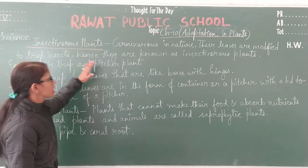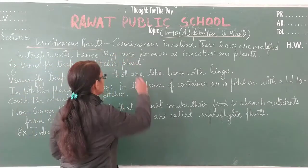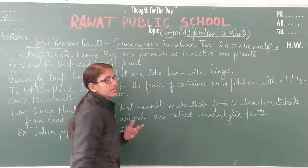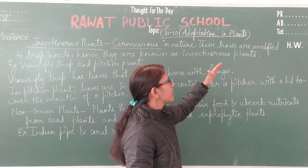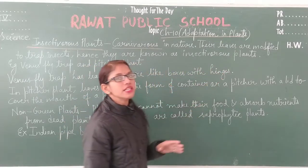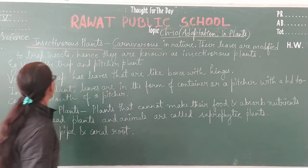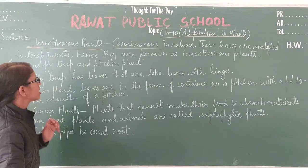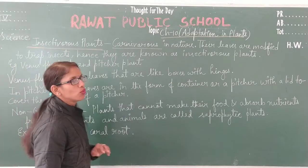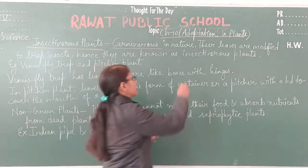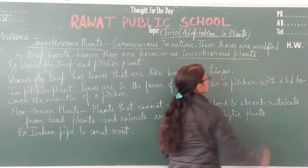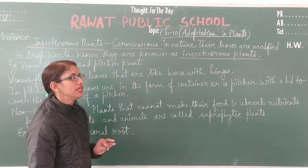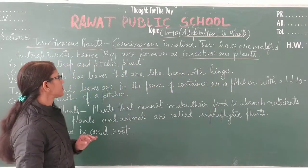Insectivorous plants are carnivorous in nature. They eat insects and their leaves are modified. In these plants, the leaves are modified to grab and catch insects, which is why they are known as insectivorous plants.